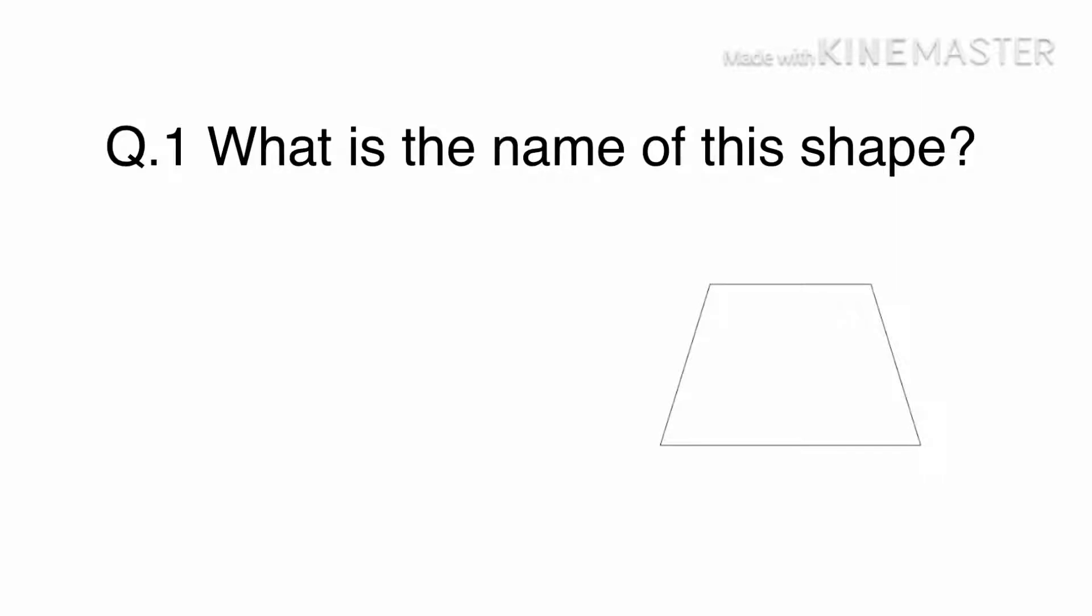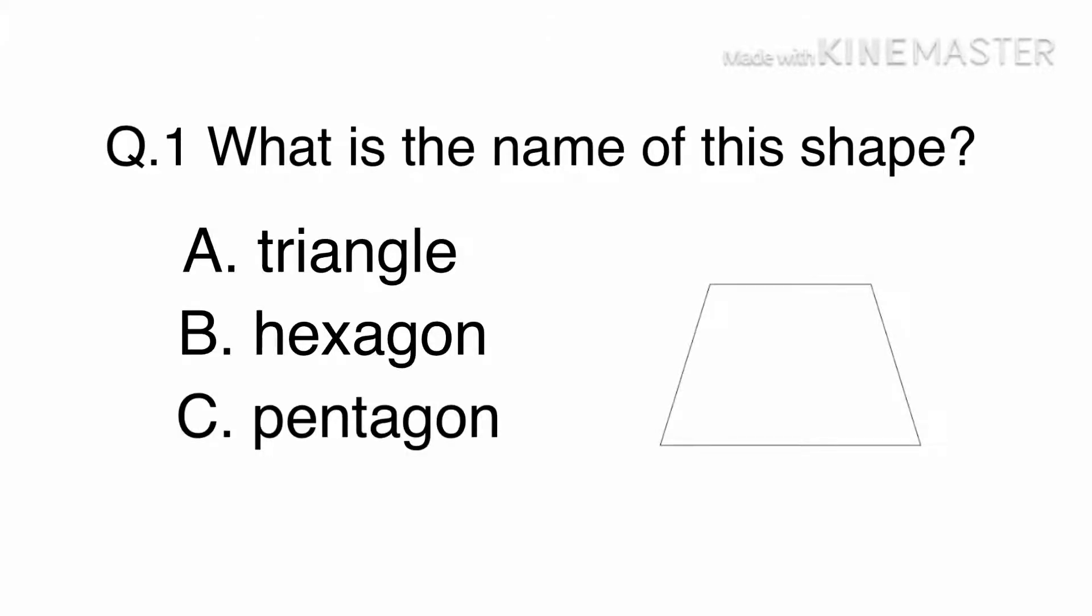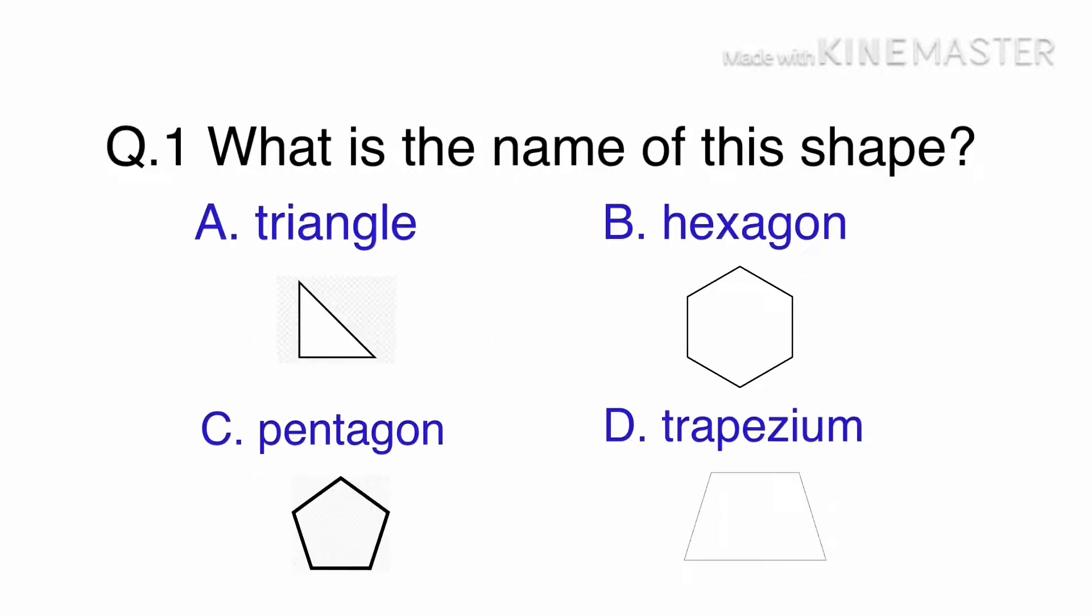Question 1: What is the name of this shape? A. Triangle, B. Hexagon, C. Pentagon or D. Trapezium. Let's look at the shapes for each option. They are asking for the trapezium. This is D.